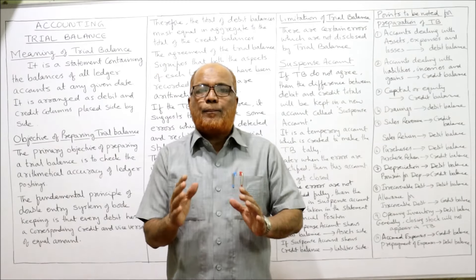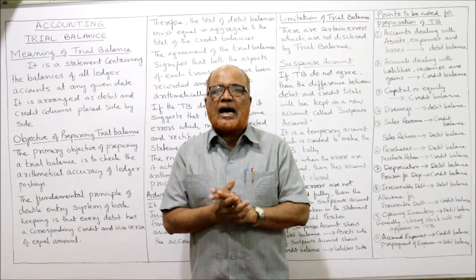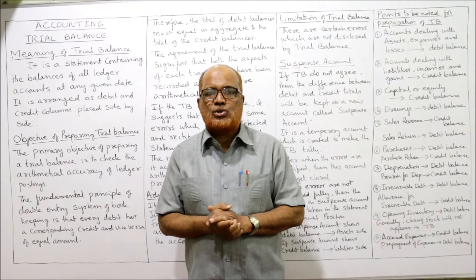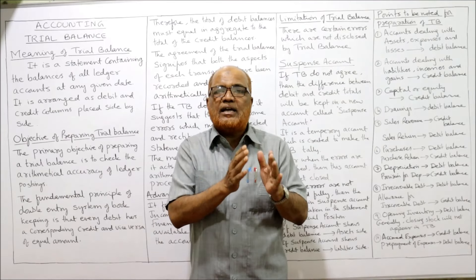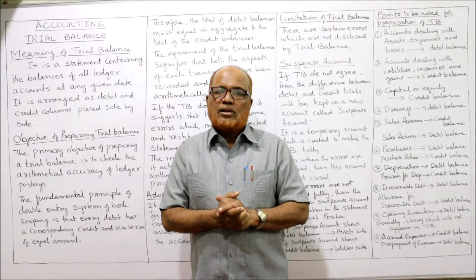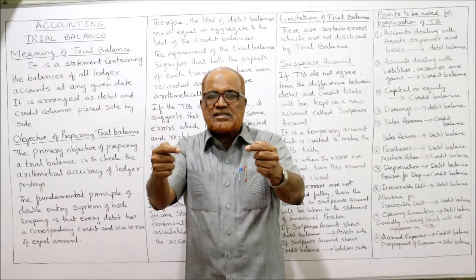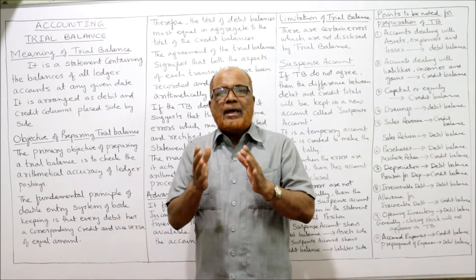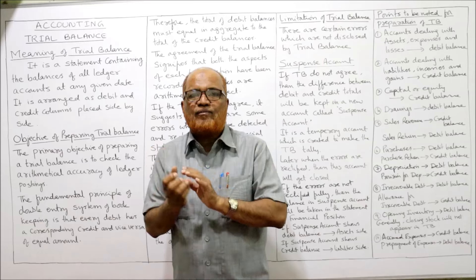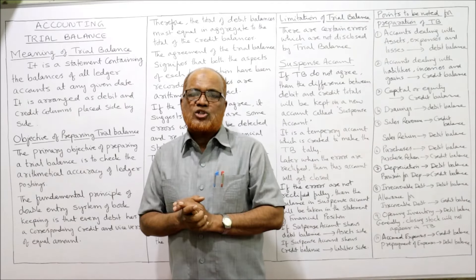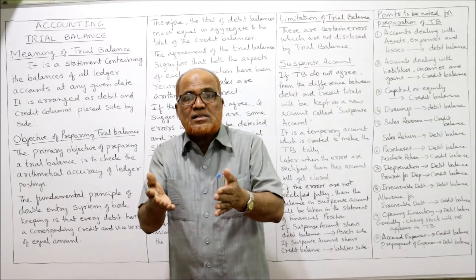In this video I have explained the theoretical part of the chapter on trial balance. I explained the meaning: it is a statement prepared to check the arithmetical accuracy of the books of accounts. If the total of debits and total of credits are equal, the books of accounts are arithmetically correct with no errors. The advantage is that by making the trial balance it becomes easier to prepare the financial statements — the income statement and statement of financial position. The limitation is that all errors will not be disclosed.